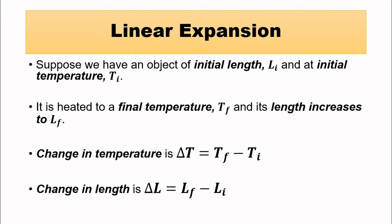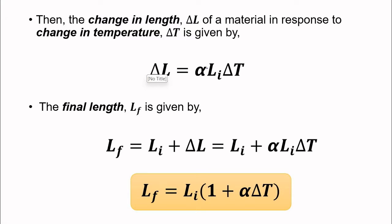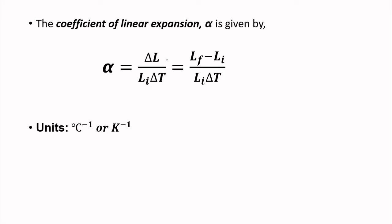Linear expansion is basically along one dimension. Suppose a rod or any linear object is at an initial temperature Ti and initial length li. It is heated to a final temperature Tf, and as a result its length increases to final length lf. The increase in length is given by alpha times li times delta-T, directly proportional to initial length and change in temperature. Alpha is the proportionality constant. The final length is lf = li(1 + alpha·delta-T). The coefficient of linear expansion has units of per degree Celsius or per Kelvin.